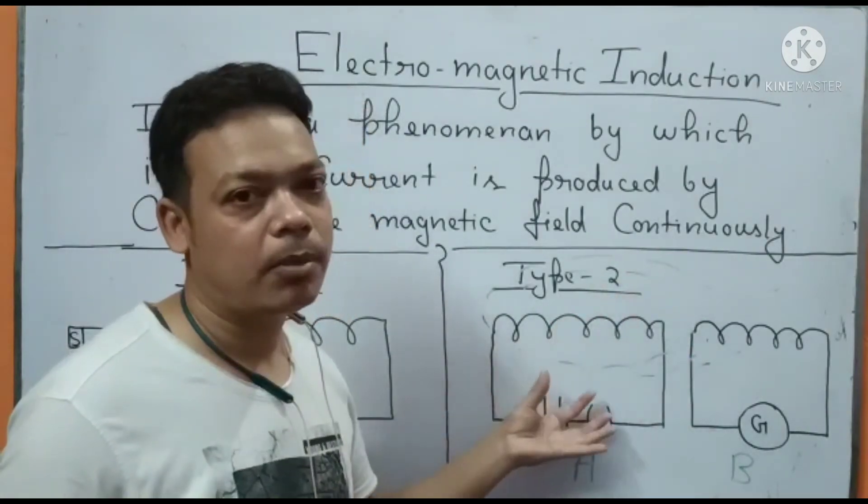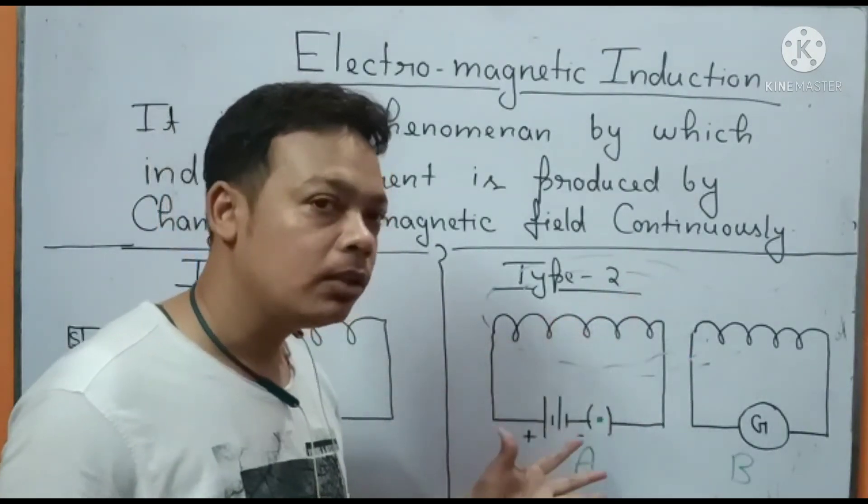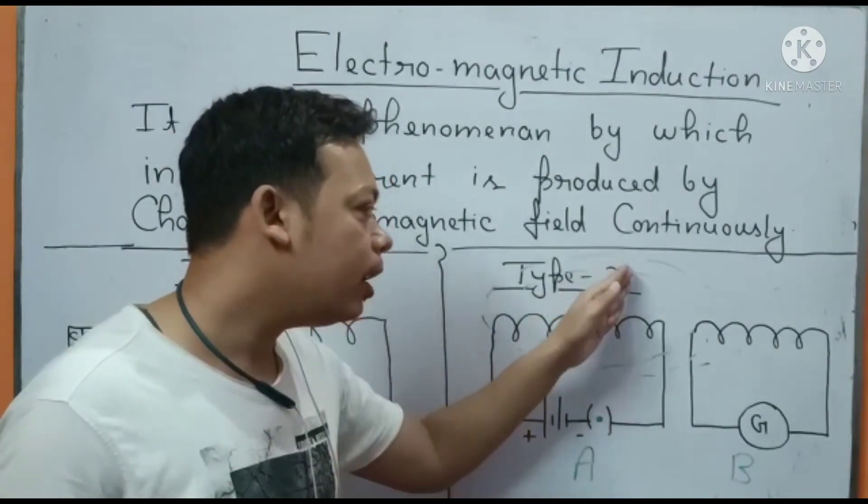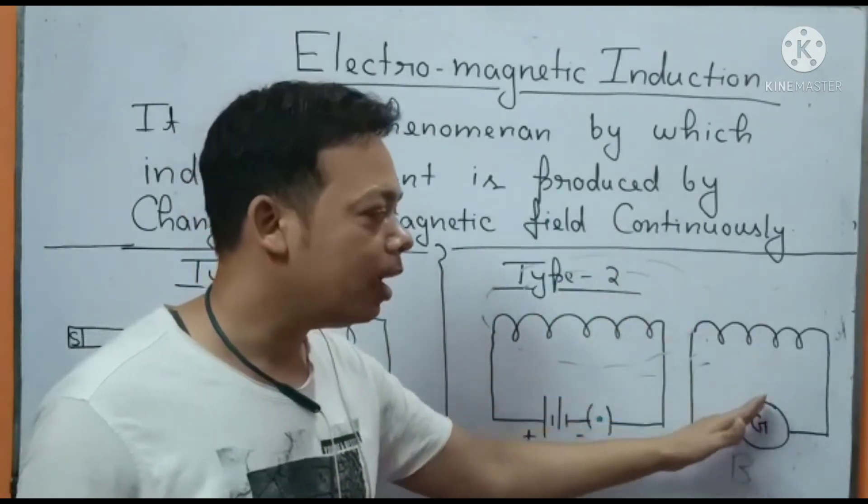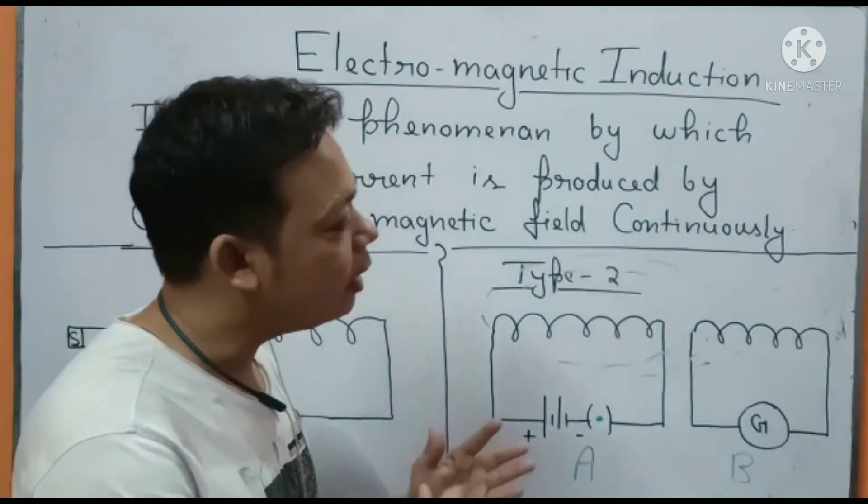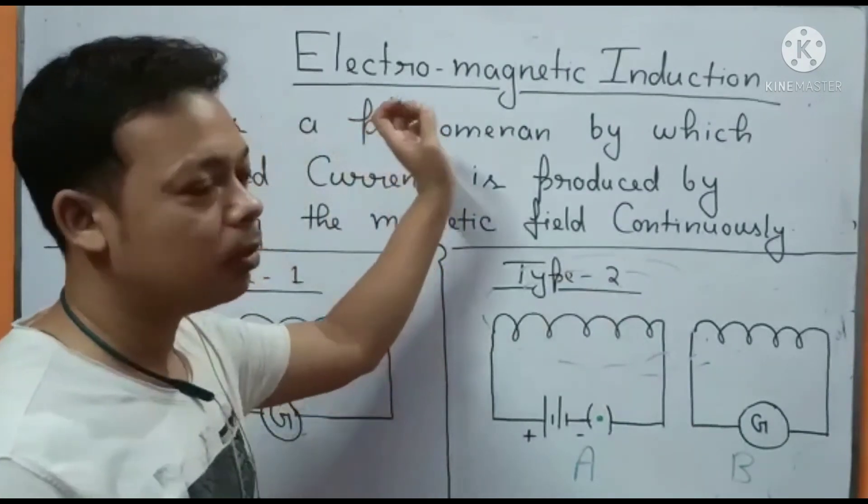The magnetic field was getting produced and by switching it off you were destroying the magnetic field. Due to this change in magnetic field, current flows in the second coil. That current is called induced current and this entire phenomenon is known as electromagnetic induction.